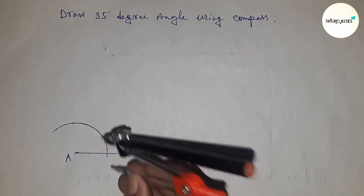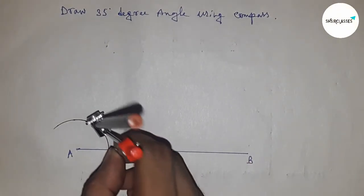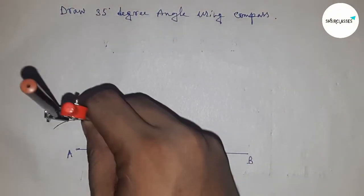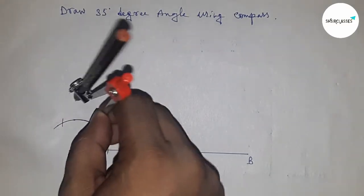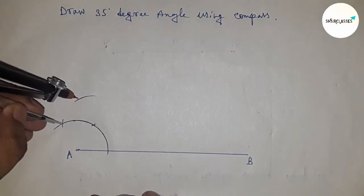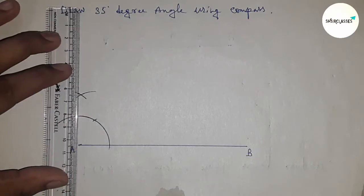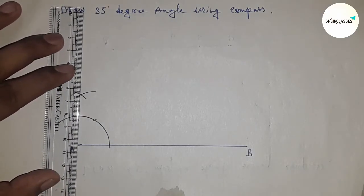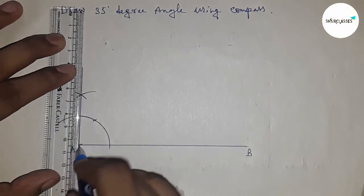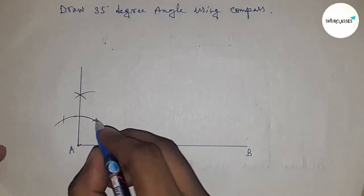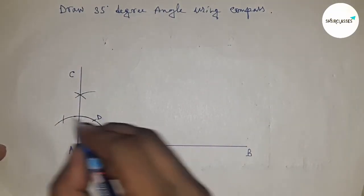With the same length, put the compass here and cut the arc. Then put the compass here and draw an arc. Put the compass here again and cut the arc. We're constructing a 90-degree angle first. Join this line, and this creates a 90-degree angle. Mark this as point C.